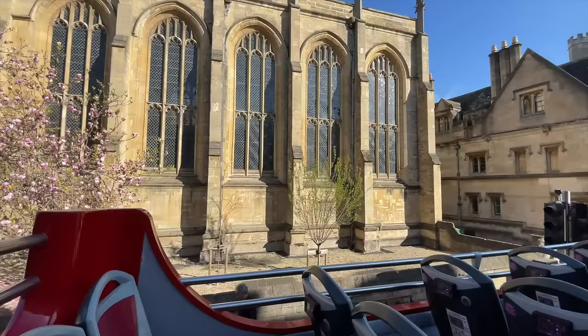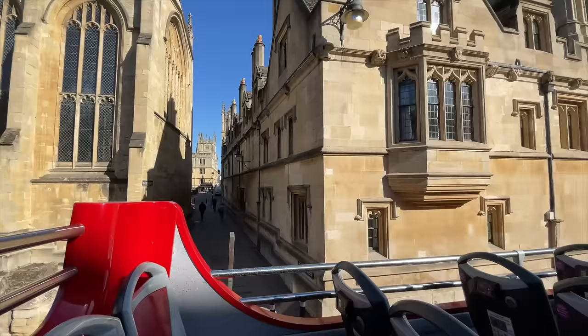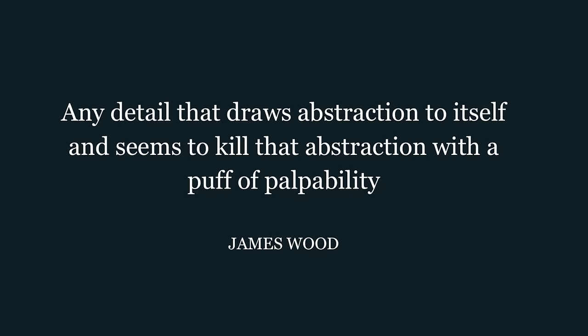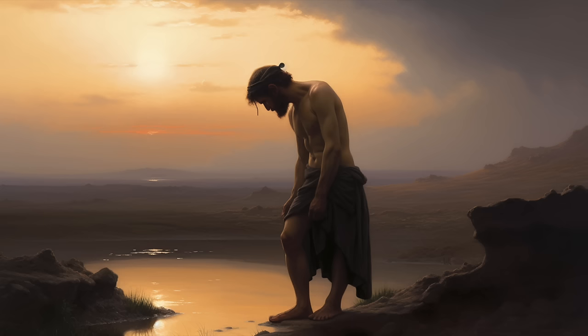I'm grateful to New Yorker columnist James Wood for making me aware of thisness, which he describes in his book 'How Fiction Works.' He defines it as any detail that draws abstraction to itself and seems to kill that abstraction with the puff of palpability. As an example, he cites the observation recorded by George Orwell in his essay 'A Hanging,' about a condemned man being led to the gallows who stepped aside to avoid a puddle.